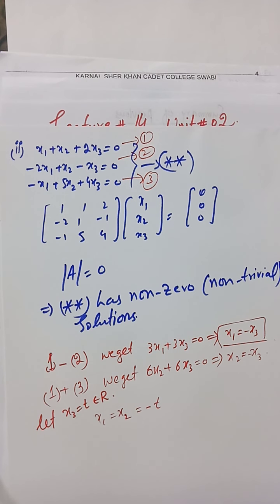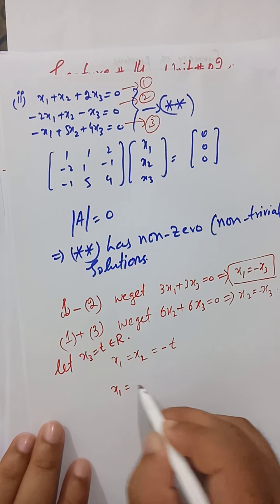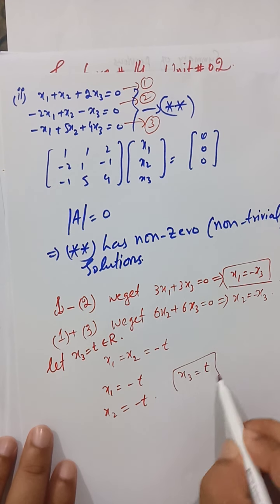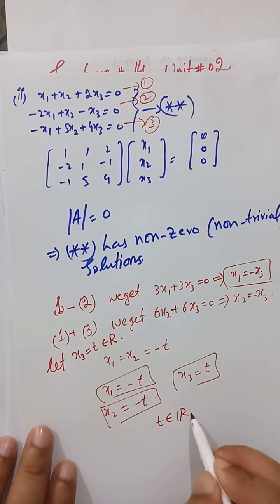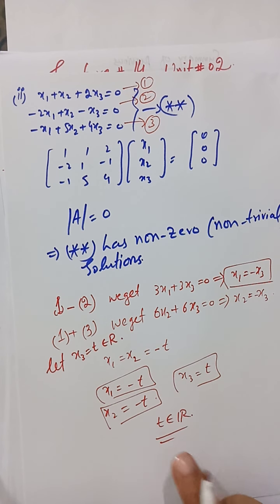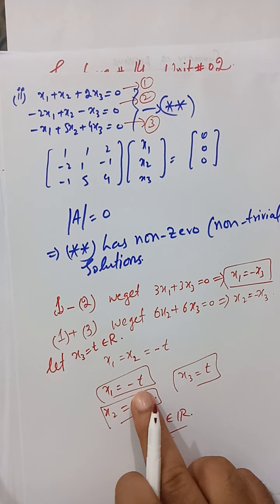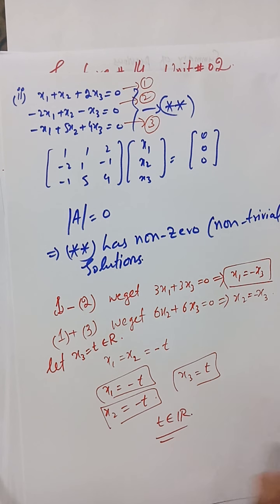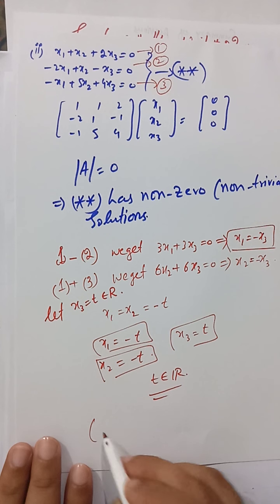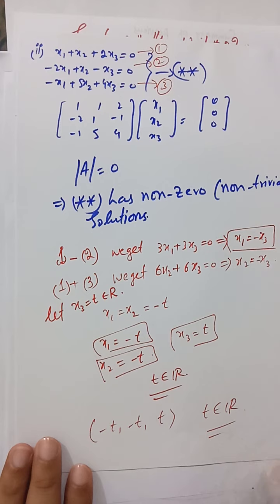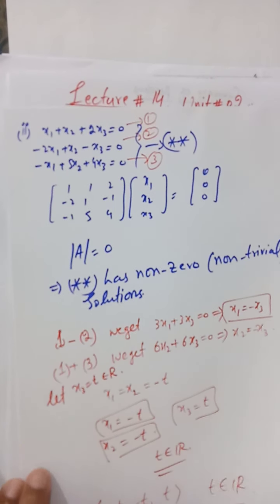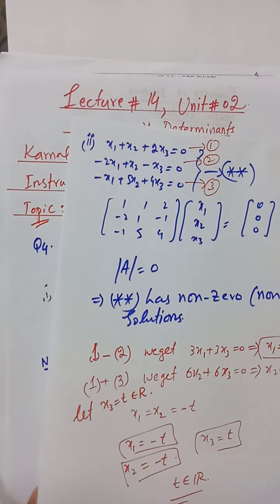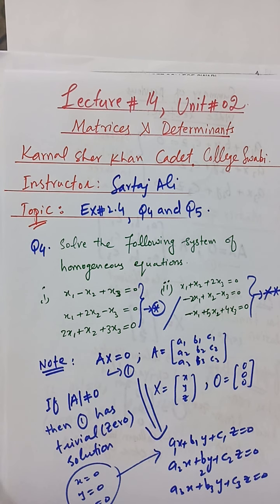From this we conclude that x1 = x2. Let x3 = t, where t belongs to the set of real numbers. Then x1 = -t, x2 = -t, and x3 = t. Since t is from the set of real numbers, there are infinitely many solutions — infinite possibilities for x1, x2, and x3 by taking different values of t. So the solution is (-t, -t, t) where t belongs to the set of real numbers. This is the non-trivial solution.